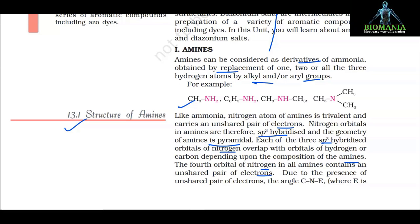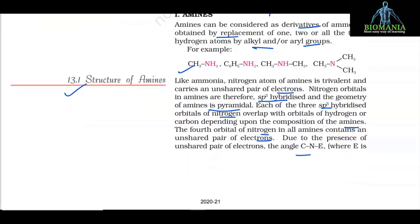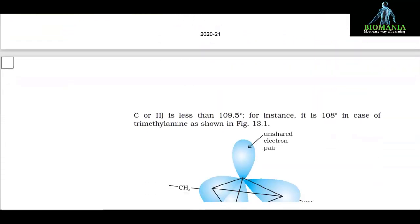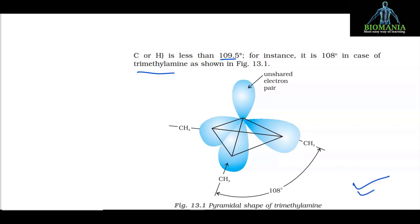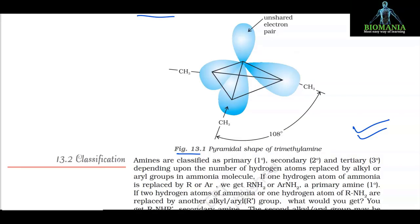Due to the presence of the unshared pair of electrons, the bond angles C-N-C or H-N-C are less than 109.5 degrees. For instance, it is 108 degrees in case of trimethylamine as shown in figure 13.1, which shows the pyramidal shape of trimethylamine.